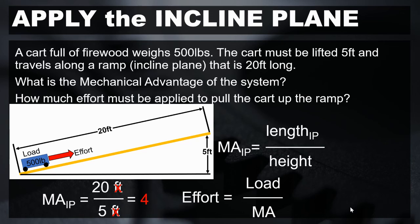We still need to apply this mechanical advantage to our effort equation. Our load is still 500 pounds, and the mechanical advantage we just calculated is 4. Therefore, the effort to move this cart up the ramp is 125 pounds. So by lengthening the ramp on an inclined plane, we increase the mechanical advantage and reduce the amount of effort that you need to apply.